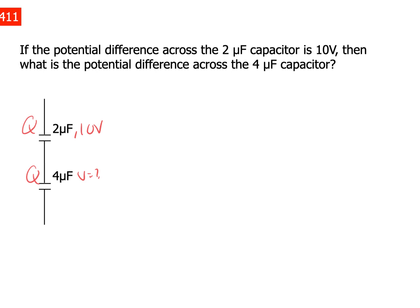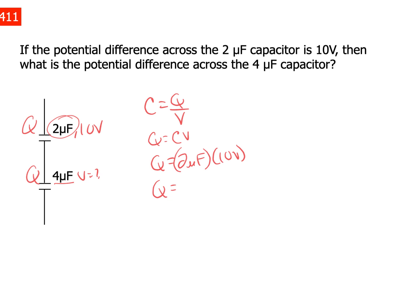So I'm going to calculate the charge on the two microfarad capacitor, and then I'll know that that same charge is on the four microfarad capacitor, which I can use to calculate the voltage. Step one: charge on the two microfarad capacitor. Capacitance is a ratio of charge to voltage, so charge equals capacitance times voltage. Charge equals two microfarads times 10 volts, which gives 20 microcoulombs — that's the charge on the two microfarad capacitor.